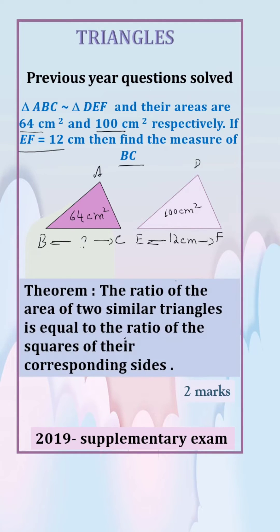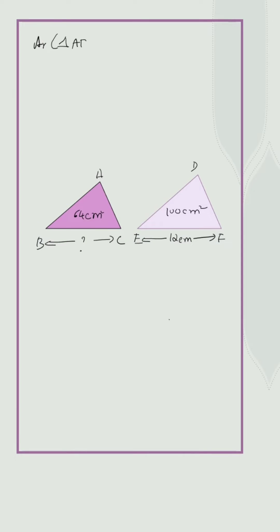The problem is based on the theorem: the ratio of the areas of two similar triangles is equal to the ratio of the squares of their corresponding sides. So we can write it as area of triangle ABC upon area of triangle DEF is equal to BC upon EF the whole square.